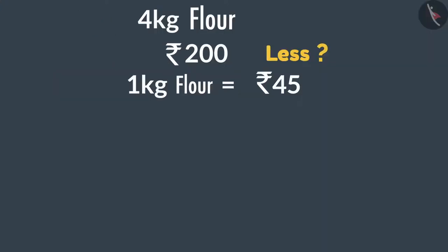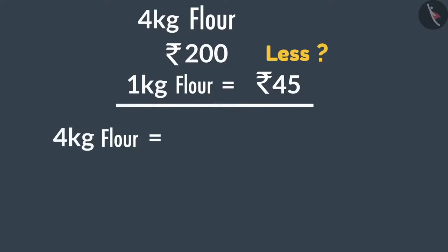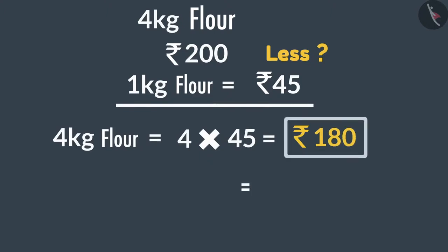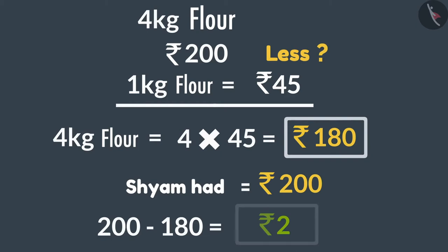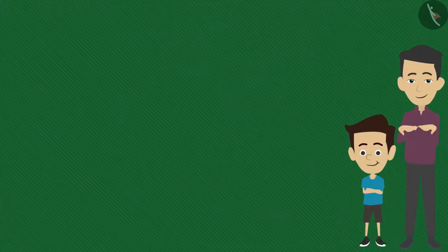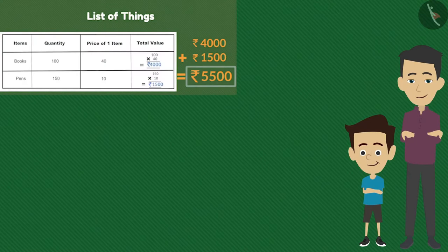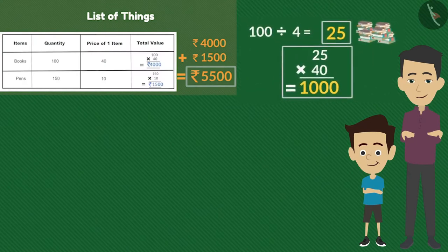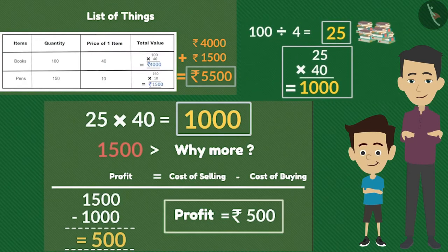If the cost of one kg of flour is 45 rupees, then the cost of four kgs would be 4 times 45, that is 180 rupees. That means Sham can easily buy four kgs of flour from the money given, and he will be left with 20 rupees. In this video we have learned about finding the total cost and finding the profit, along with Sham and Ramu. Thank you.